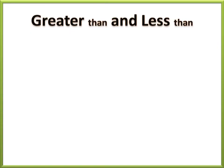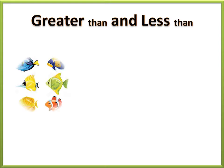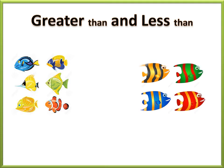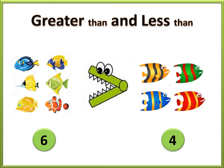Let us consider the given examples for greater than and less than. Here we have a set of fishes. We have six fishes on the left side and four fishes on the other side. We have to find which is greater and which is lesser — either six or four. So, six is greater than four. We use the greater than sign.